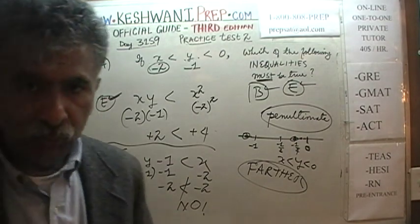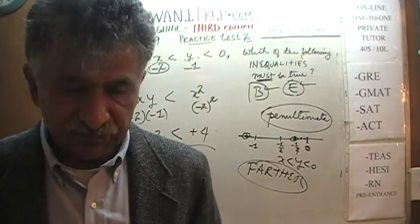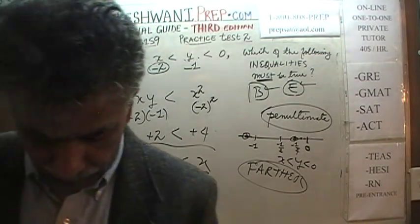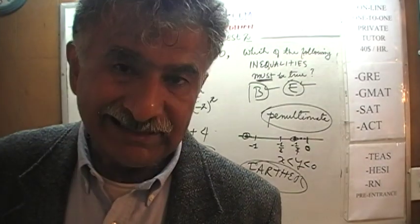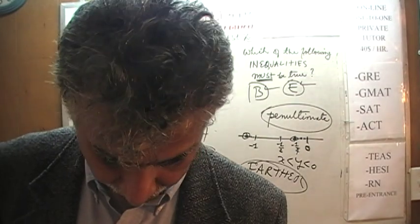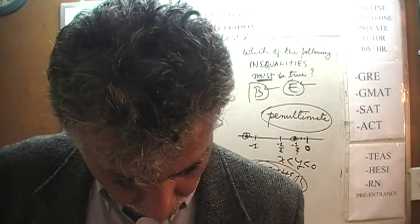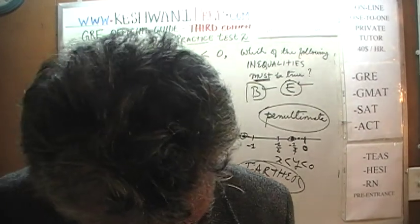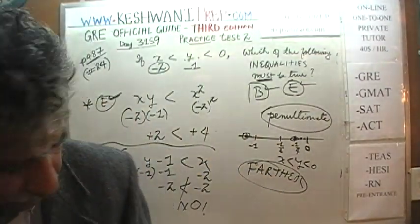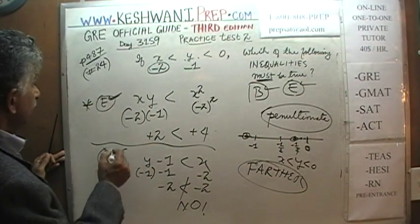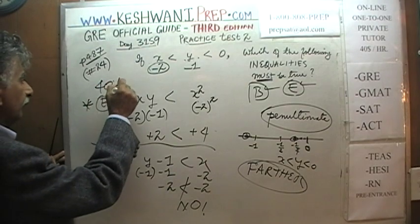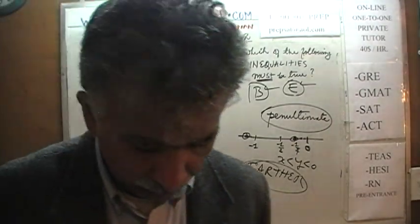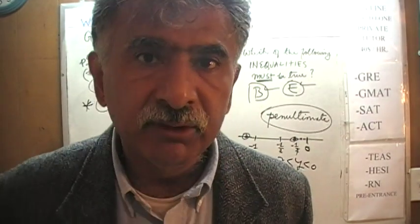The answer is E. We had two contenders left, knocked out B, and E is the winner. This question was at the 40th percentile — three-fifths of people who took the exam got this wrong.